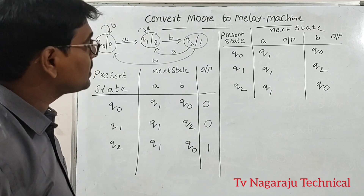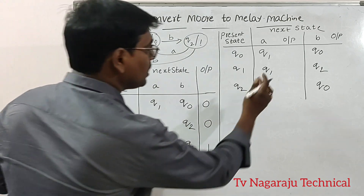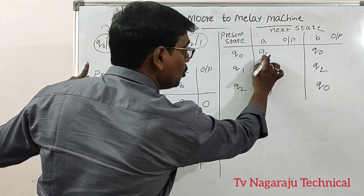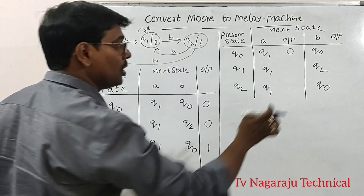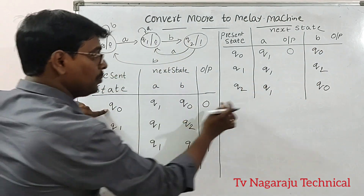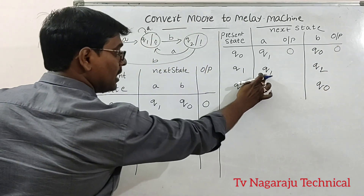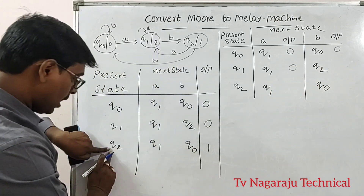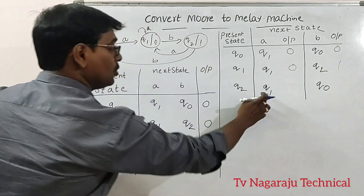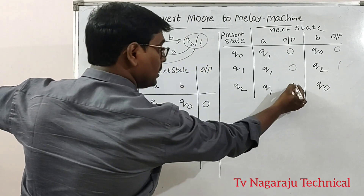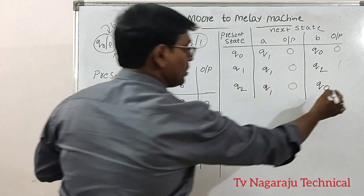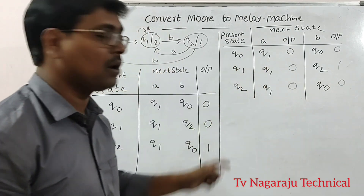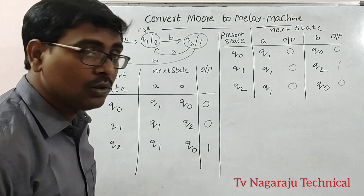How do you write directly? Very simple logic. Q1 — what is the output for Q1? Zero. Whenever we move to Q1, the output is zero. Q0 — what is the output? Zero. Here Q1, output for Q1 is zero. Q2 — the output for Q2 is one. Q1 output is zero. Q0 output is zero directly. Whatever state you move to, write down the corresponding output. Simple procedure.